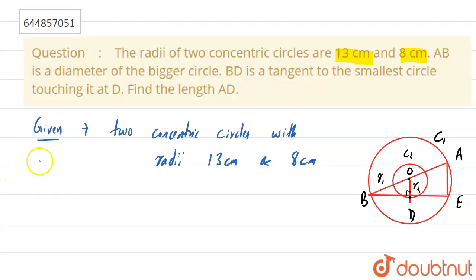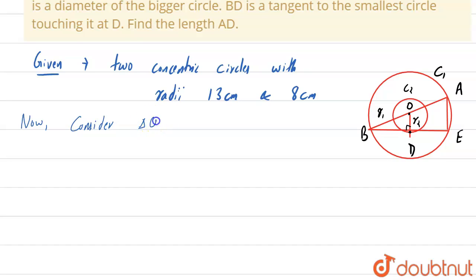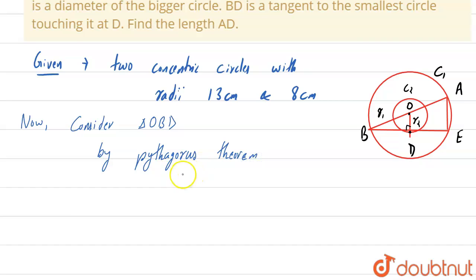Now consider triangle OVD. In this triangle OVD, if we apply the Pythagoras theorem, then OV² equals OD² plus BD², because it is a right triangle and OV is the hypotenuse while OD and BD are the base and perpendicular. So we write OB² equals OD² plus BD².